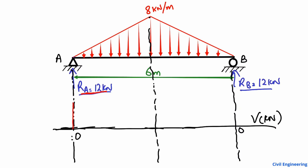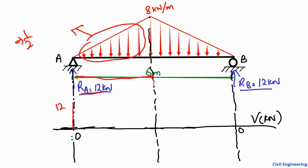We start from support A with 12 kilonewtons acting in the upward direction. The distributed load acts downward. To find the magnitude of load over the first half, we calculate the area of that triangle: half base into height. The base is 3 meters (half of 6 m) multiplied by the height of 8 kilonewtons per meter.